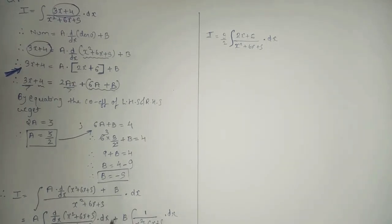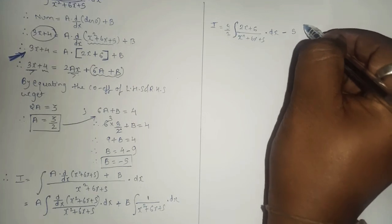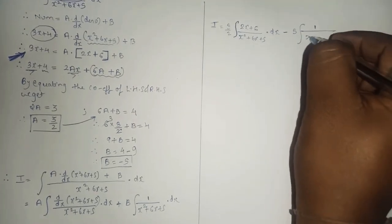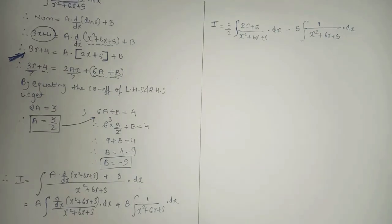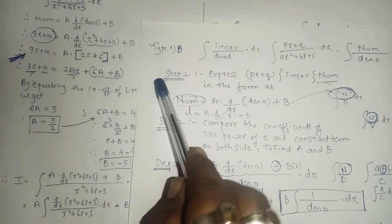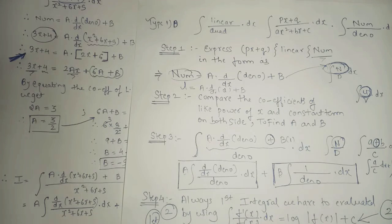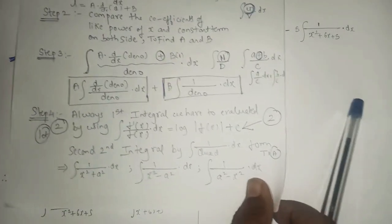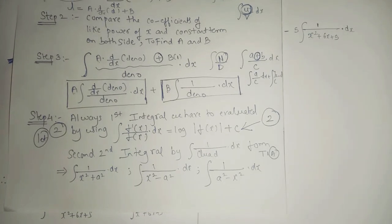The value of B is minus 5. Since there is already a plus sign, plus minus 5 becomes minus 5. So we write minus 5 times integral of 1 upon x squared plus 6x plus 5 dx. The first part will convert to f'(x)/f(x) form, which equals log|f(x)| plus c.